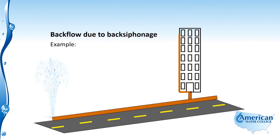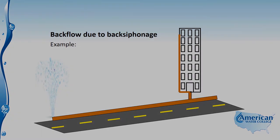If you have a water system in a high-rise building — it could be a janitor's closet with a hose stuck down into a sink, or it could be some type of laundry system connected to the potable water system — with that pressure drop in the main portion of the water system, that would cause a siphon or back siphonage into the water system. So that's an example of back siphonage.